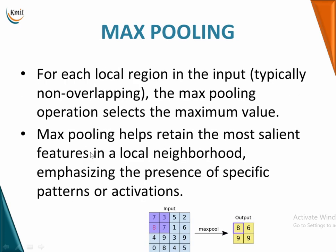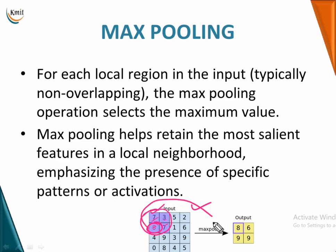There are two types of pooling: max pooling and average pooling. In max pooling, you first specify a local non-overlapping region in the input, and the max pooling operation selects the maximum value from that pool of pixels. For example, given a pool of pixels 7, 3, 8, 7, the maximum value is 8, so those four pixels are represented as a single pixel with value 8. Similarly, the next pool yields 6, then 9.